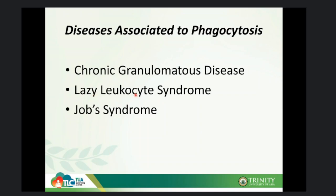We also have Job's syndrome, which is similar to lazy leukocyte syndrome in that it involves neutrophils. In Job's syndrome, the random activity of your cells is normal, but the chemotactic activity is abnormal. So when infection is happening inside your body, your cells cannot respond to the chemotoxins being released, meaning your neutrophils cannot reach the site of infection.